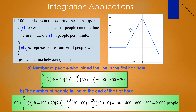Part b is slightly different — you have to pay attention to the semantics. It asks the number of people in line at the end of the first hour. We have to first account for the 100 people already in line, then add the integral from 0 to 60 of e(t) dt. So we have 100 plus the rectangle from 0 to 20 (20 times 20), plus the trapezoid from 20 to 40 (20/2 times (20 plus 60)), plus the final trapezoid (20/2 times (60 plus 10)). That gives 100 plus 400 plus 800 plus 700 — 2,000 people in line at the end of the first hour.